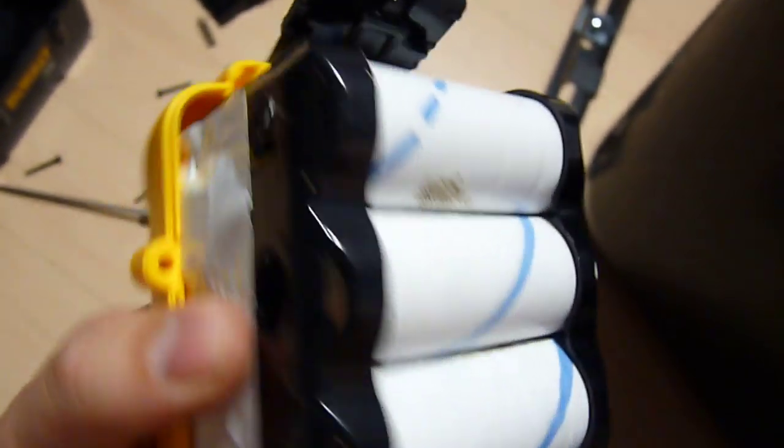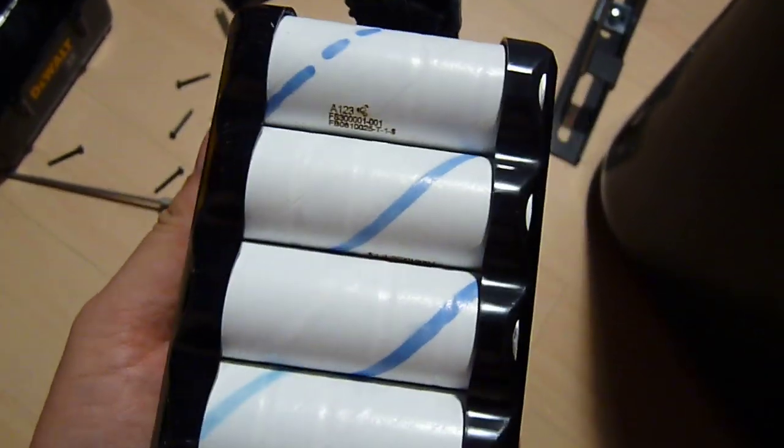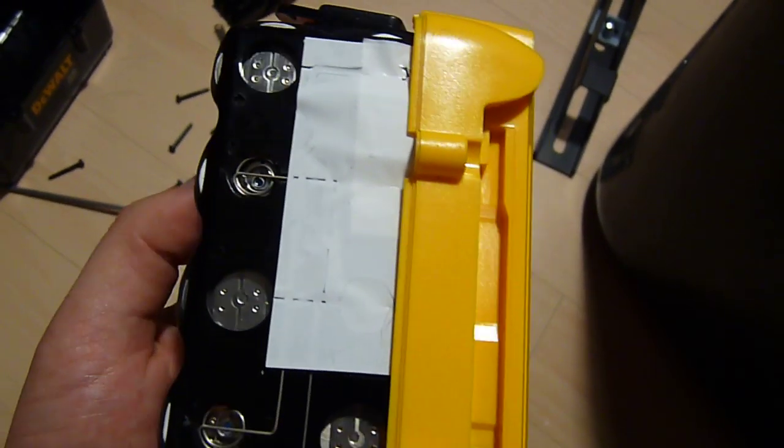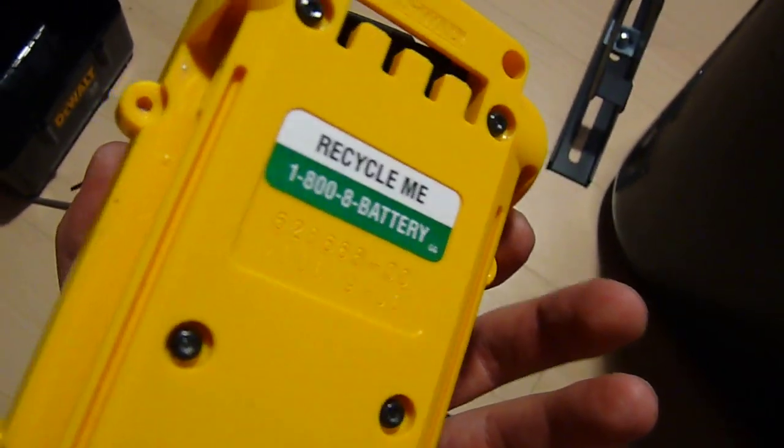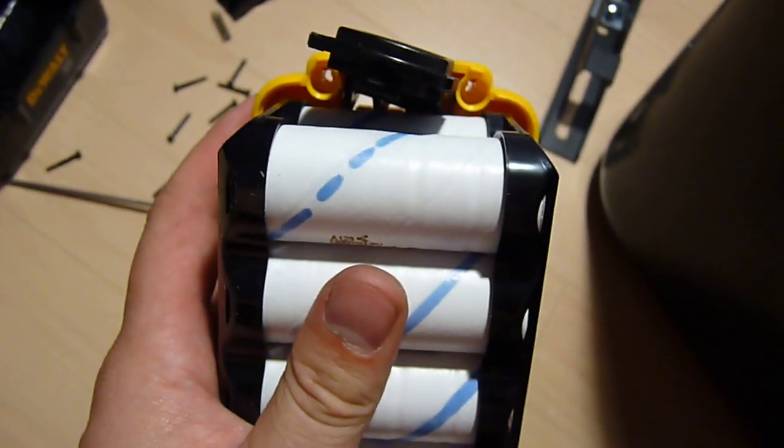Each one of those cells is connected in series, and each one is 3.6 volts, so you get 10 cells in series, you get 36 volts. And this is a really nice battery. This is made in 06 and I've been using it pretty much daily. And I don't feel any capacity loss compared to 2010-made batteries, for example.